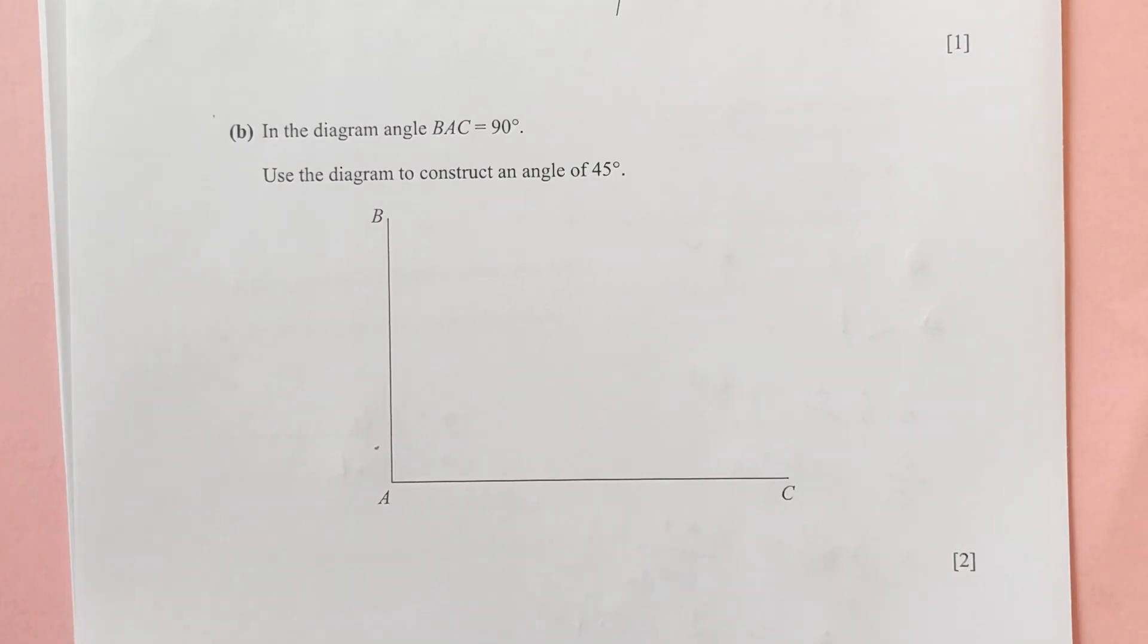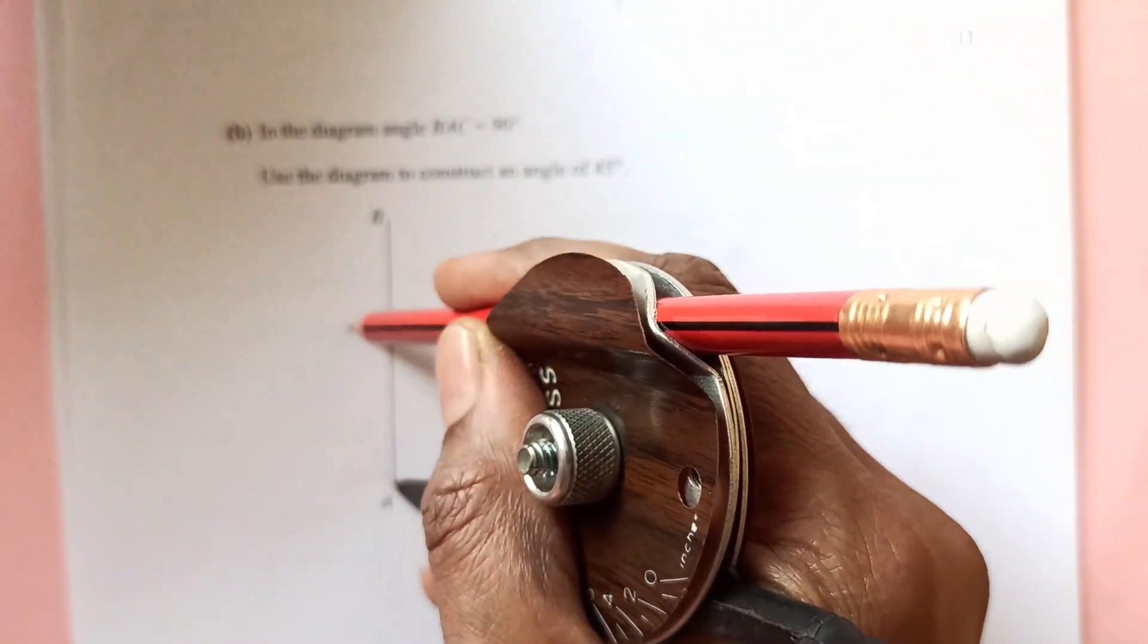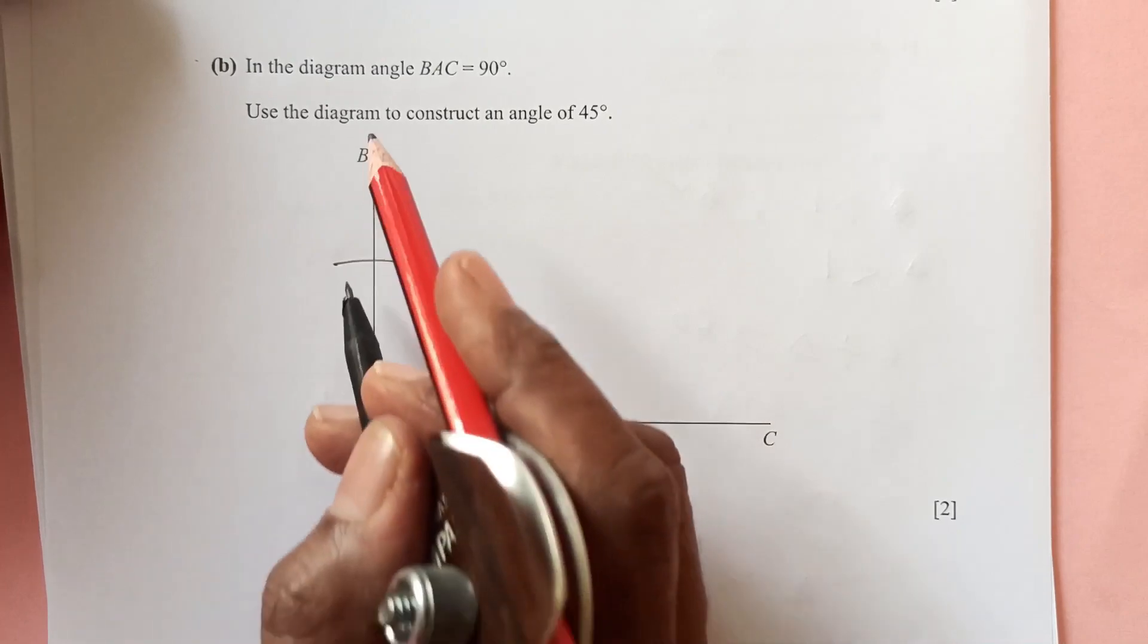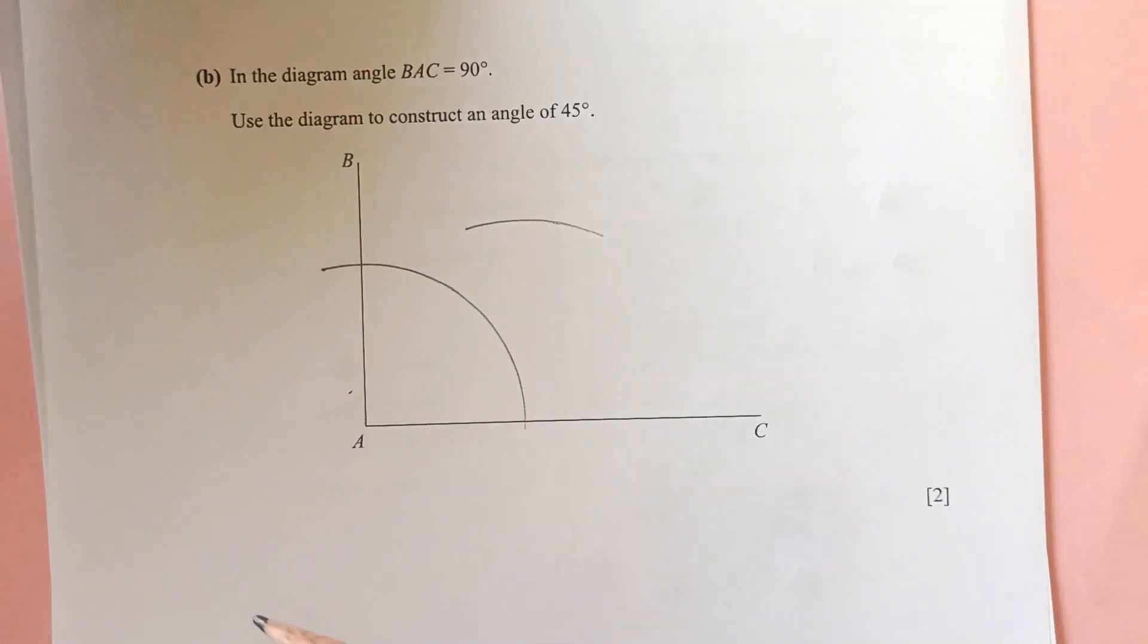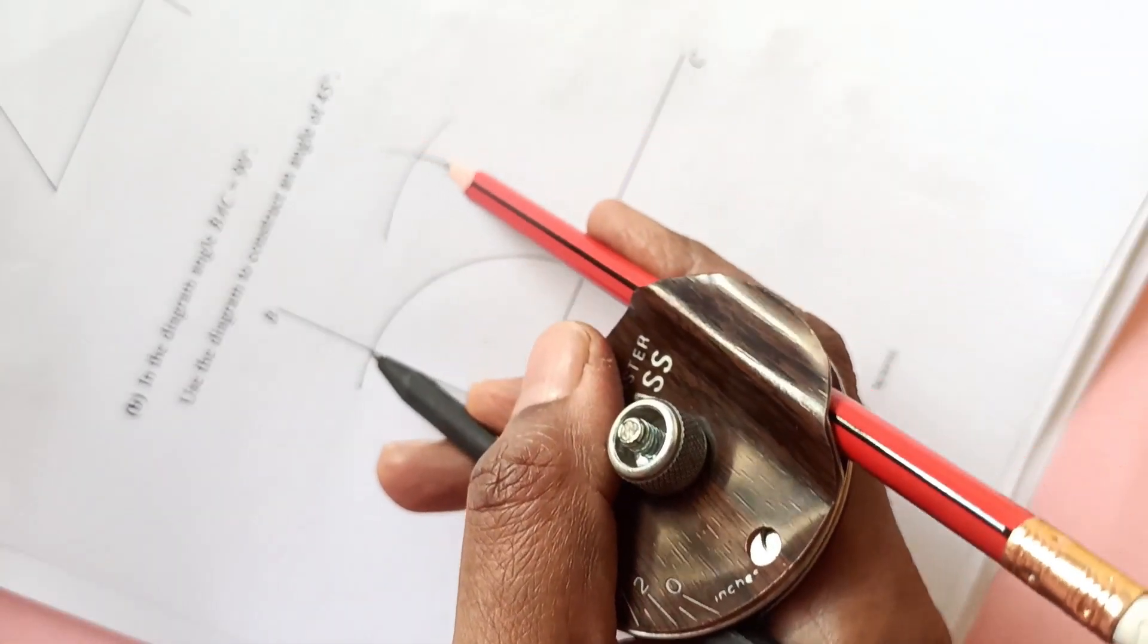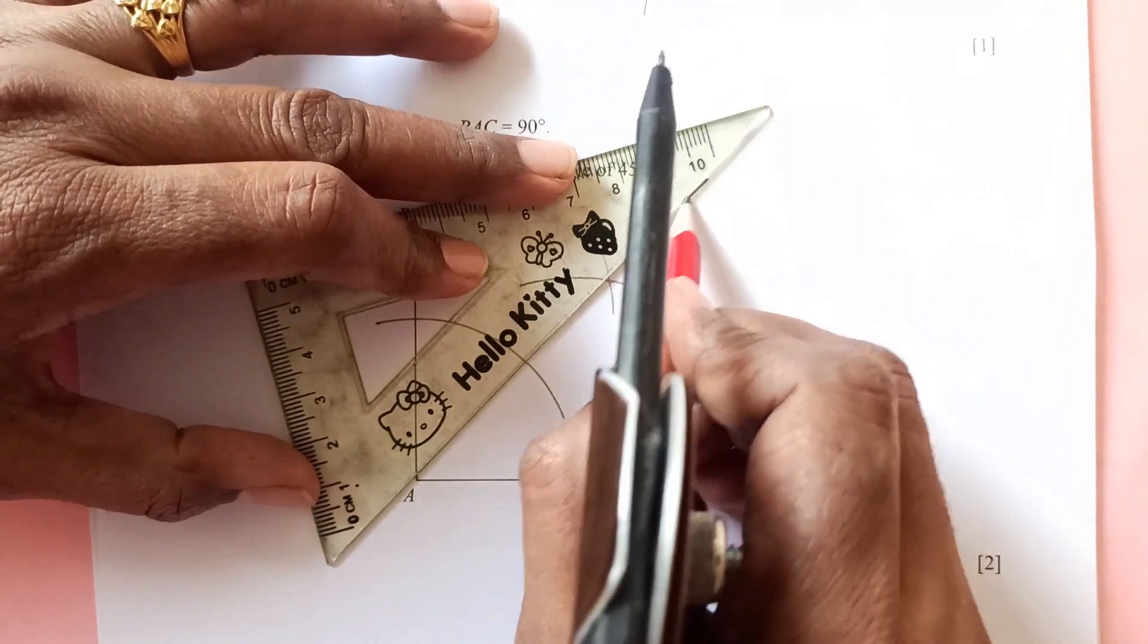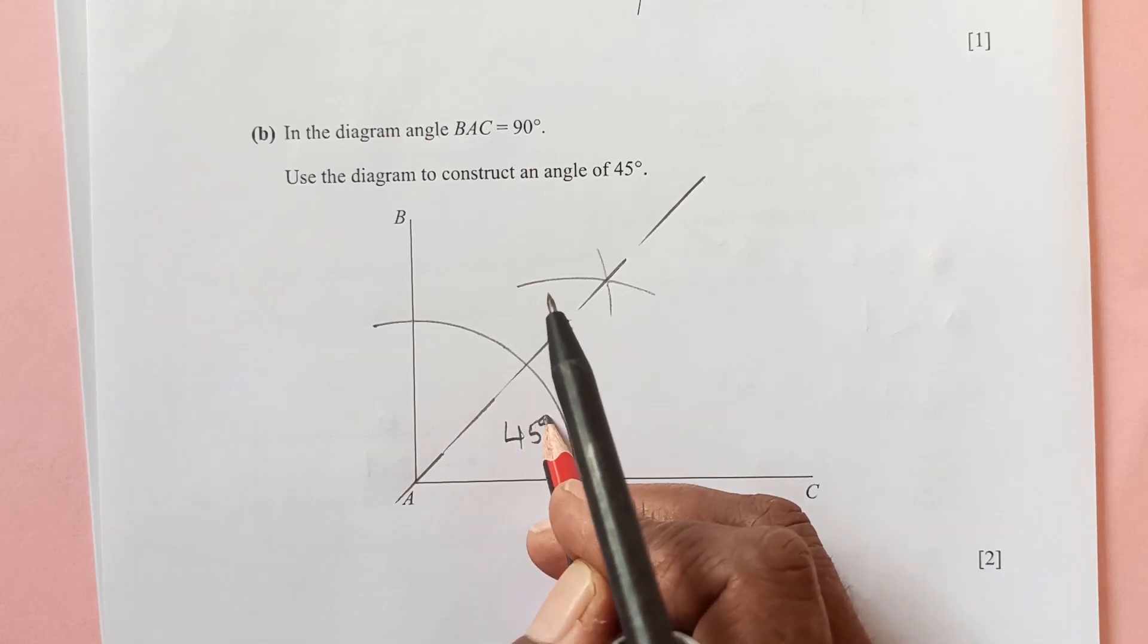Part B, in the diagram BAC is equal to 90. Use the diagram to construct angle of 45. If you observe it carefully, this is angle of 90. That means half of 90 is going to be 45. First we will draw this arc over here. Now take half of this, from here to here, take the middle value. From here, draw an arc like this. One end and from the second end, you can draw another one like this. Then you just join it. This is angle of 45 degrees from here to here.